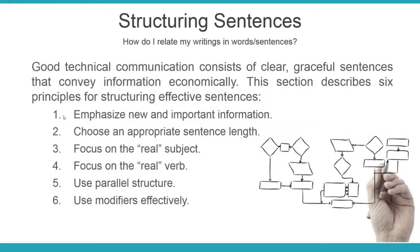To make a sentence clear and precise, you have to make the sentence contain information economically. For example, a summary has a word limit, and within that limit you must write something specific — so choose the right word, don't waste space, and don't use unnecessarily lengthy words.